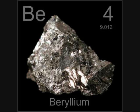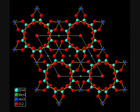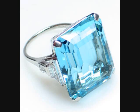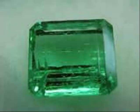Beryllium is fairly rare on Earth, despite its low atomic number, and is found in the mineral beryl, a beryllium aluminum silicate. While you may not have heard of the mineral beryl, you have probably heard of its common varieties, aquamarine and emerald.